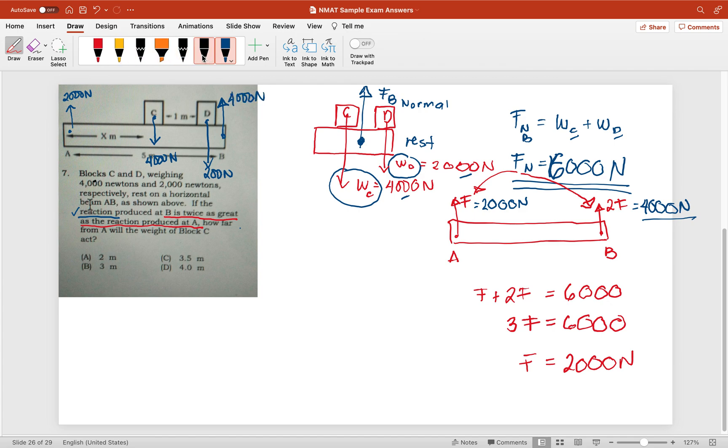Now, according to the problem, they are at rest. If at rest, it means the summation of torque - they are in equilibrium. The summation of torque equals zero. So the formula of torque is force times distance. So let's start here.